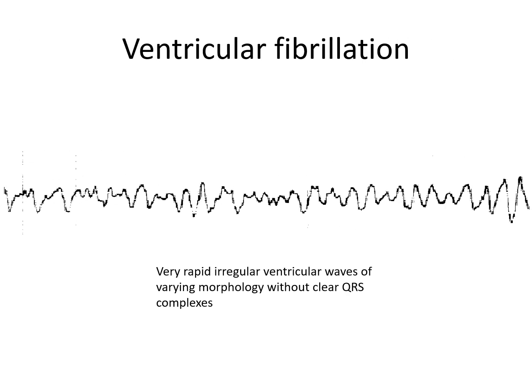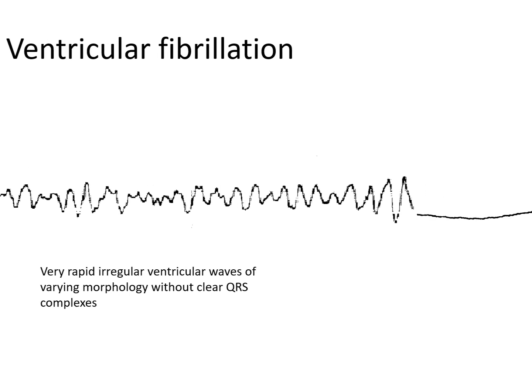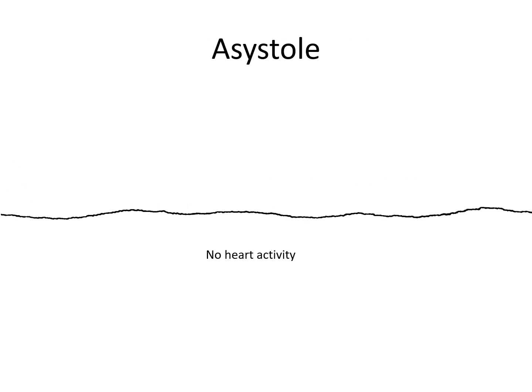Ventricular fibrillation: very rapid, irregular ventricular waves of varying morphology without clear QRS complexes. Asystole: no heart activity at all.